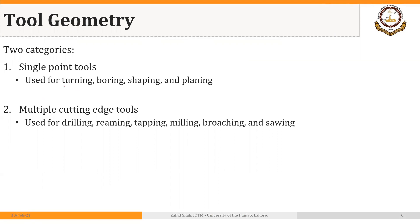Examples of single point cutting tools are turning tools, boring tools, shaping tools, and tools used with a planer machine. Examples of multiple point or multiple cutting edge tools are drill bits, reamers, tapping tools, milling tools, broaching tools, and the saws used on sawing machines. Today we are going to discuss single point cutting tool geometry.